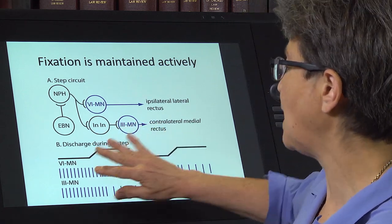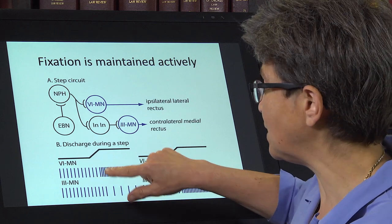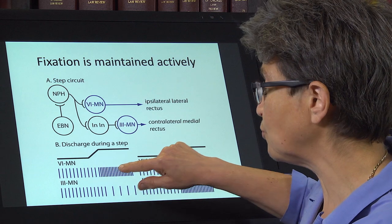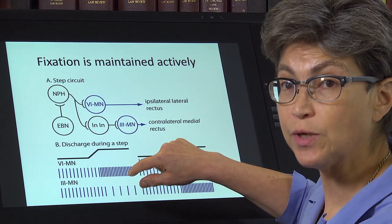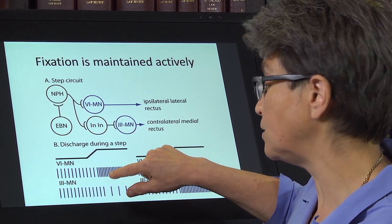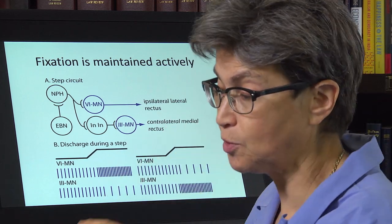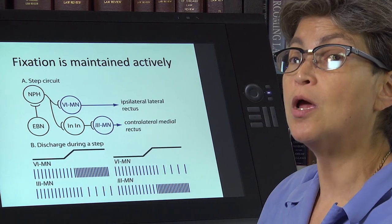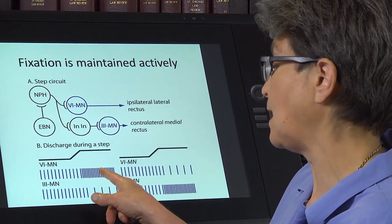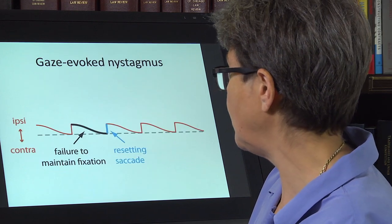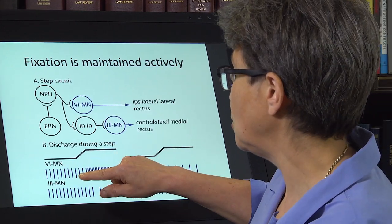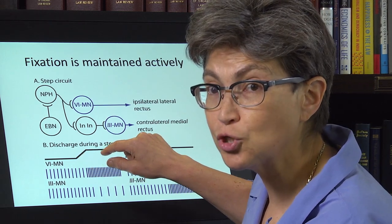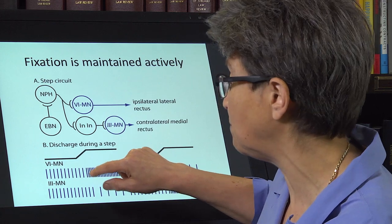Now, let's imagine that you can get there but you can't maintain this firing discharge — that for some reason this is weak. The motor neuron can't maintain it. The problem could be out in the muscle, in the nerve, or somewhere else, but for whatever reason this step cannot be maintained. Then what happens? One drifts back to neutral, because you can't maintain the step.